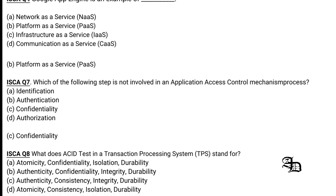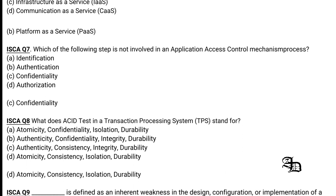Question 3: What does ACID stand for in a Transaction Processing System? ACID stands for Atomicity, Consistency, Isolation, and Durability. Option D is the correct answer. Confidentiality and authenticity are not part of ACID.